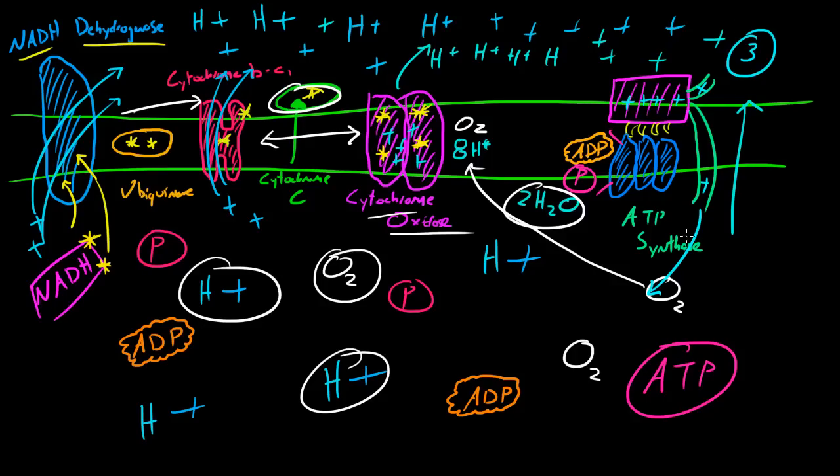Whenever they enter and exit, it creates basically, literally, a spinning motion. Now, spinning, just like a turbine, creates energy, and it's energy that the bottom half of the ATP synthase molecule can use.